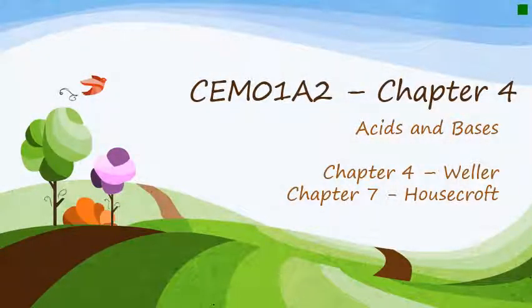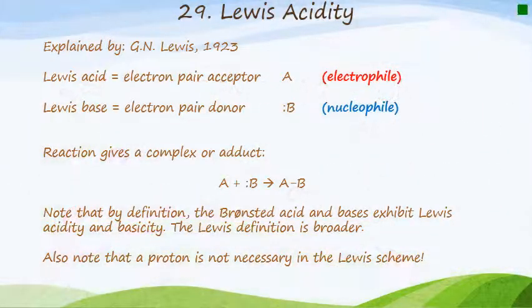Hello again students. This is the final section of the acid base unit. We're going to be looking at specifically a new class of definition of acids and bases, particularly called Lewis acidity. It was explained by the chemist G.N. Lewis in 1923.